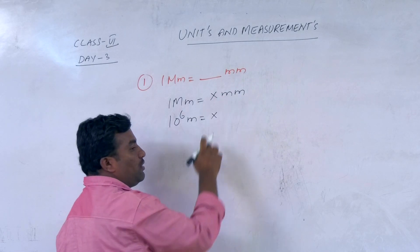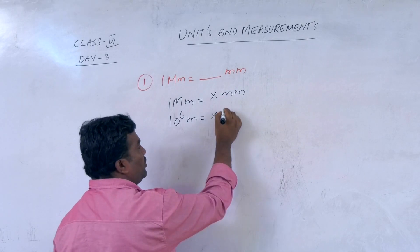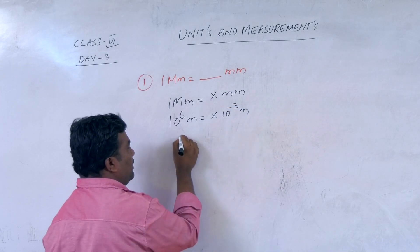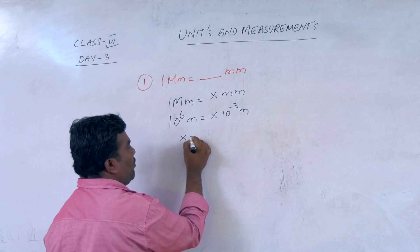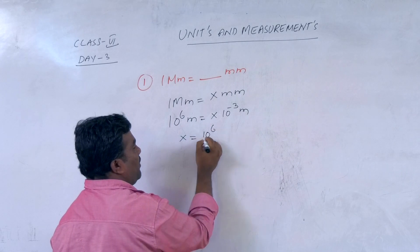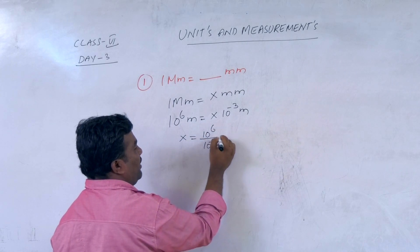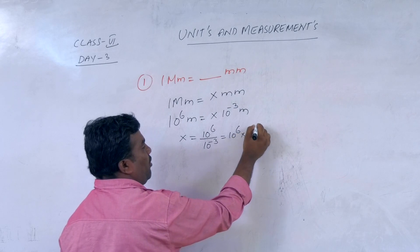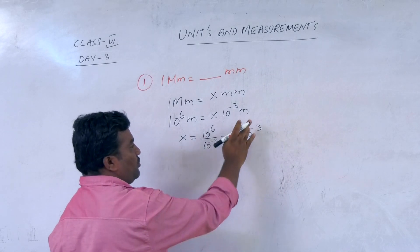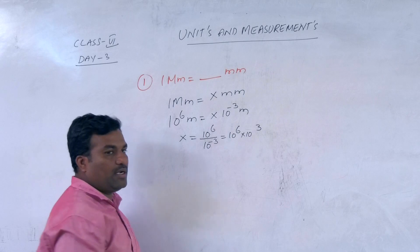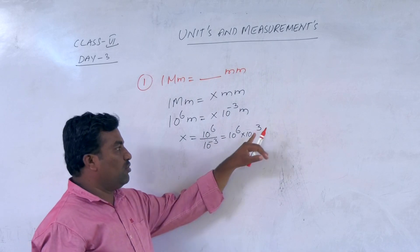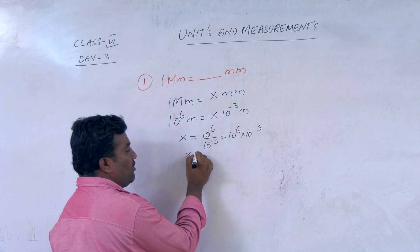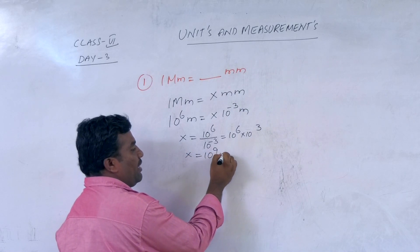Millimetre is the submultiple — 10 to the power of minus 3 metres. Metre cancels. x equals 10 to the power of 6 divided by 10 to the power of minus 3, which is 10 to the power of 6 into 10 to the power of plus 3. The denominator goes to the numerator, so power minus 3 becomes plus 3. Totally, x equals 10 to the power of 9.